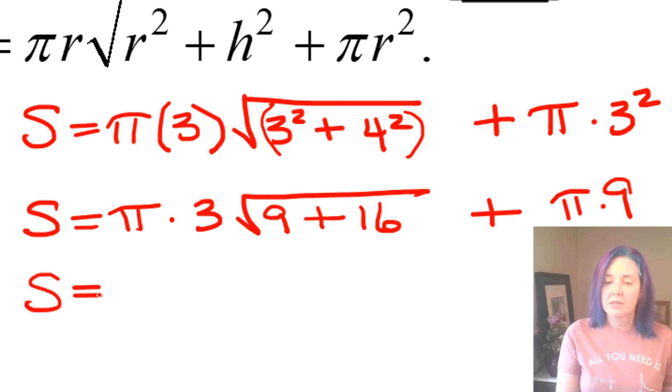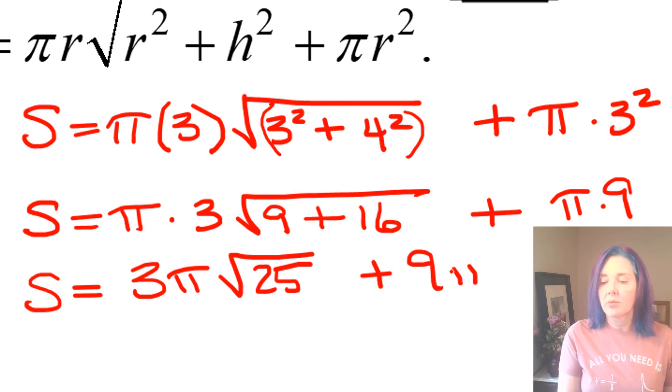So that means that the surface area is three pi, doesn't matter the order in which you write that, this way I don't have to write a dot, three pi times the square root of 25 plus nine pi.